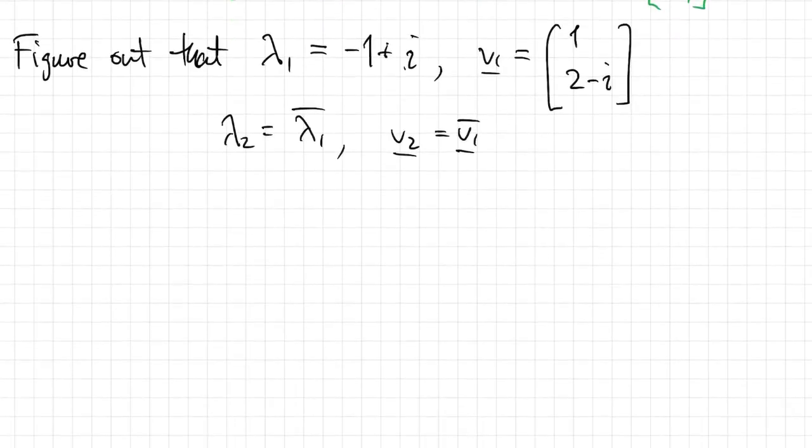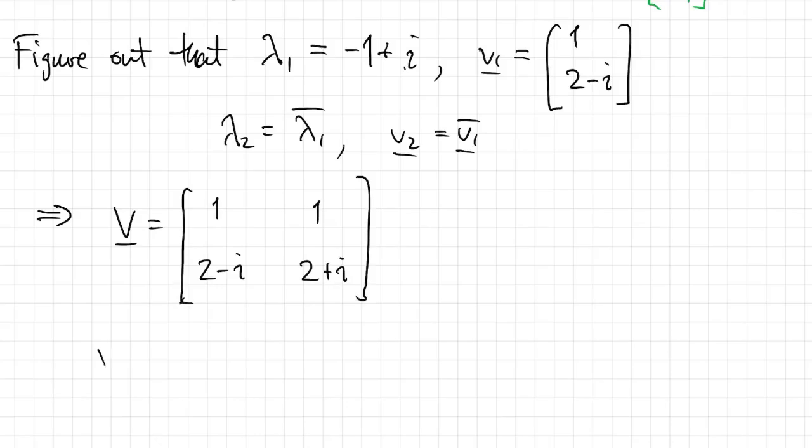V is the matrix of the eigenvectors. We have to find its inverse. So we have 1 over the determinant, swap the two diagonals, and negate the others.